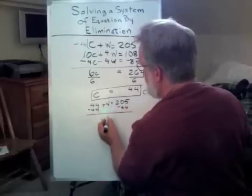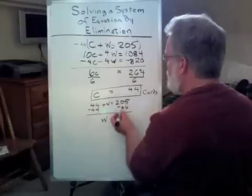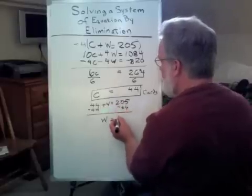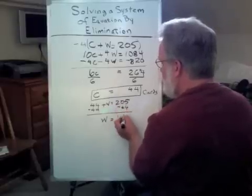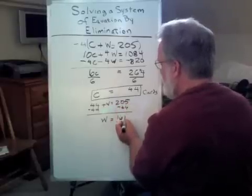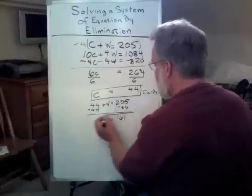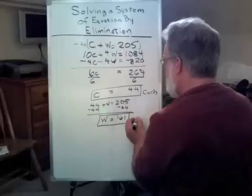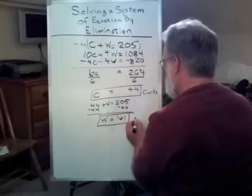Therefore, I now have W equals 20 take away 4, that's 16, and 5 take away 4, that's 1. So I have 161 packages of gift wrap.